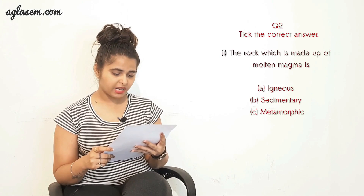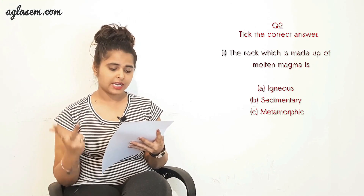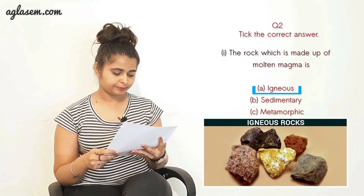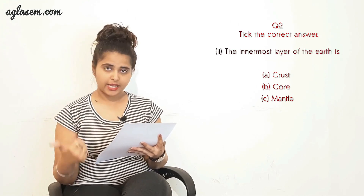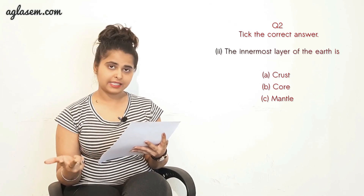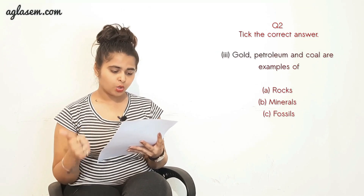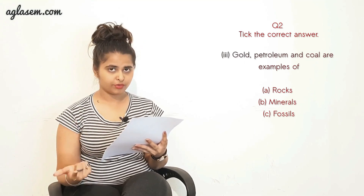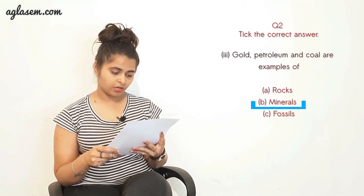Now the second question - Tick the correct answer. Part one: The rock which is made up of molten magma is (a) igneous, (b) sedimentary, or (c) metamorphic. The answer is (a) igneous. Part two: The innermost layer of earth is (a) crust, (b) core, or (c) mantle. The answer is (b) core. Part three: Gold, petrol, and coal are examples of (a) rock, (b) mineral, or (c) fossil. The answer is (b) minerals.